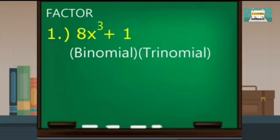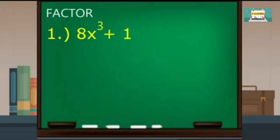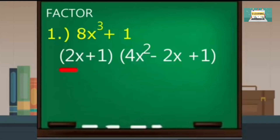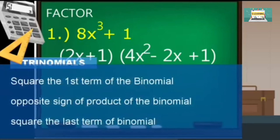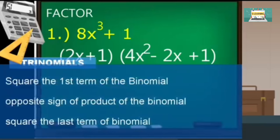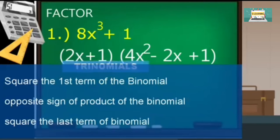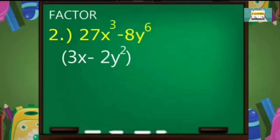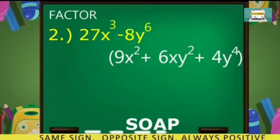For the second activity, let us factor 8x cubed plus 1. The factors must be one binomial and the other a trinomial. For the binomial, you have to get the cube root of the first term and the last term. For your trinomial, the trinomial should be based on your binomial: square the first term, use the opposite sign of your binomial for the middle term — multiply the two terms — and then square the last term. Always remember: the binomial has the same sign, then the opposite sign of the middle term of your trinomial, and the last term is always positive.